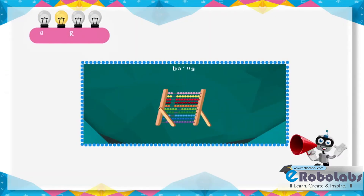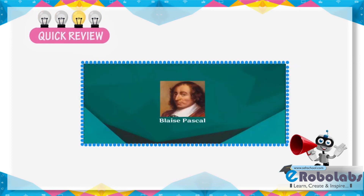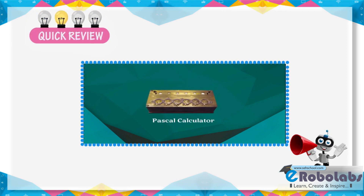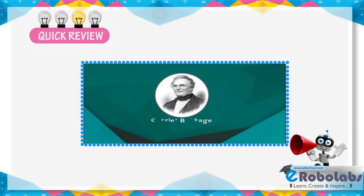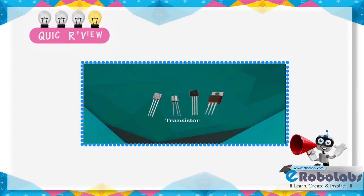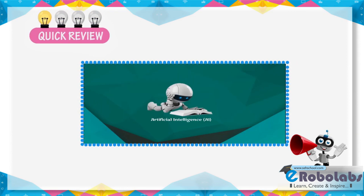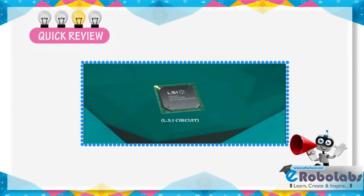The first calculating device was the Abacus. Napier used bone rods for the counting purpose where some numbers were printed on these rods. In the year 1642, Blaise Pascal, a French scientist, invented an adding machine called Pascal's Calculator. Sir Charles Babbage is known as the father of computers. The vacuum tube was introduced in the first generation of computers. In the second generation, vacuum tubes were replaced by transistors. Microprocessor is the main concept behind the fourth generation. The fifth generation is based on Artificial Intelligence. LSI stands for Large Scale Integrated Circuits. VLSI stands for Very Large Scale Integrated Circuits.